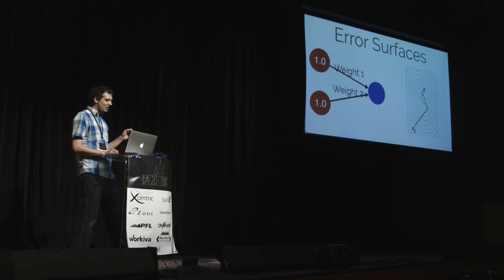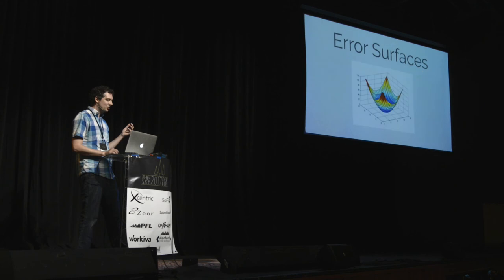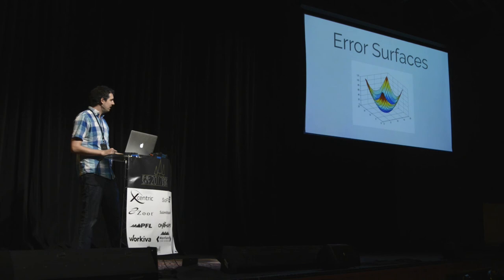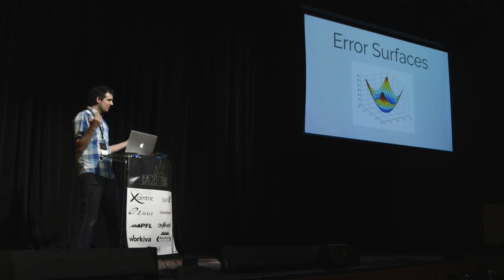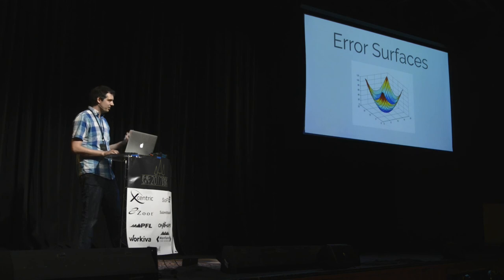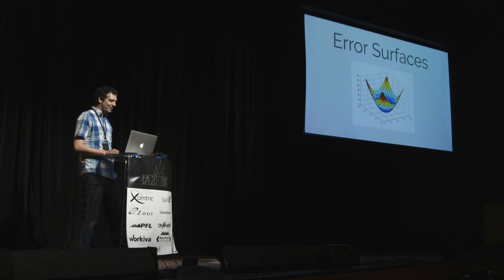It's a little hard to visualize, but each weight is like a dimension on a surface. If we had three weights we could visualize a three-dimensional object where we're moving towards the lowest point. The challenge is you might have a million weights, and that's impossible to visualize, but it's easier to think about in two- or three-dimensional space.